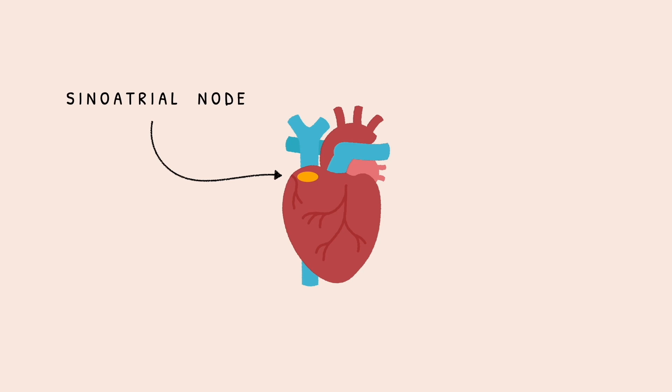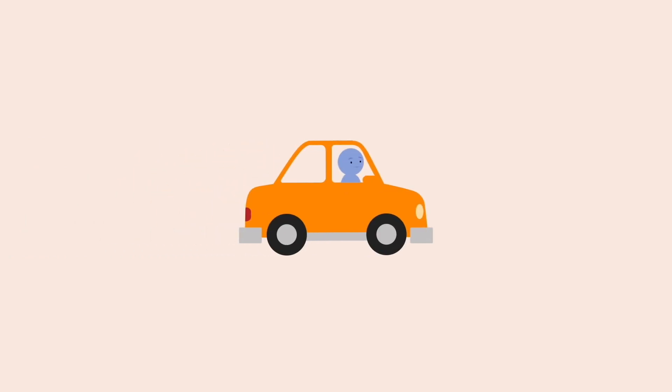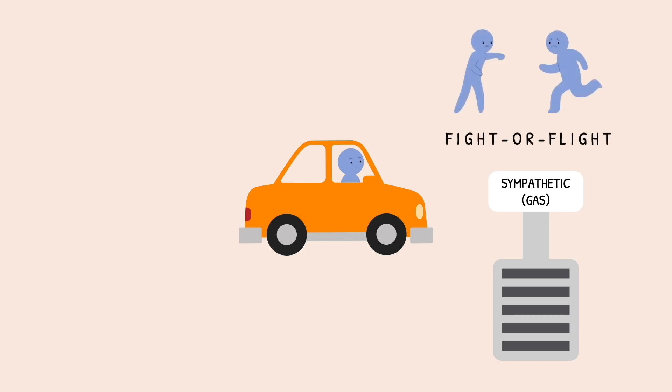The vagus nerve and the parasympathetic nervous system work in opposition to the sympathetic nervous system. To understand how, imagine your body is a car. Your sympathetic nervous system is the gas pedal. It speeds everything up, including heart rate, breathing, and energy, so you can respond to challenges through fight or flight. But too much gas without control can lead to stress, anxiety, or overreaction.